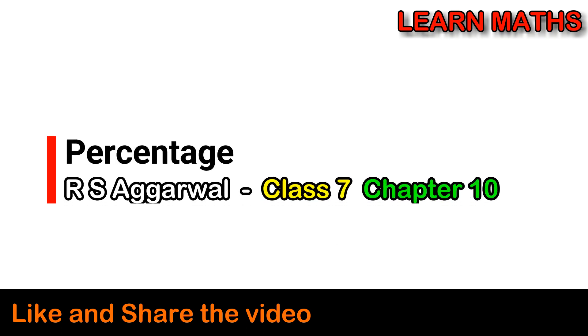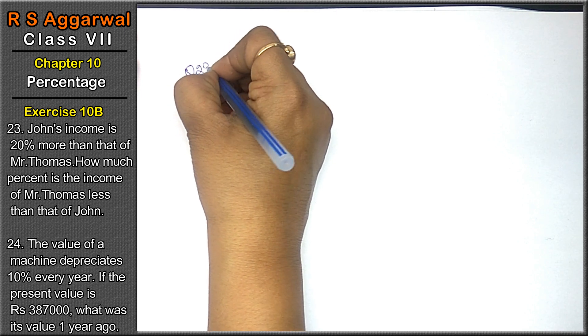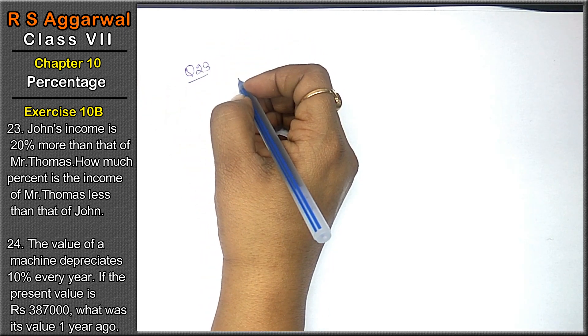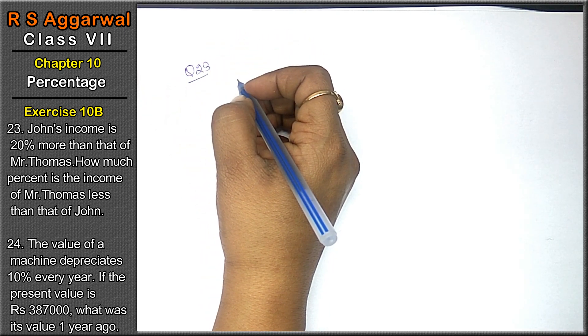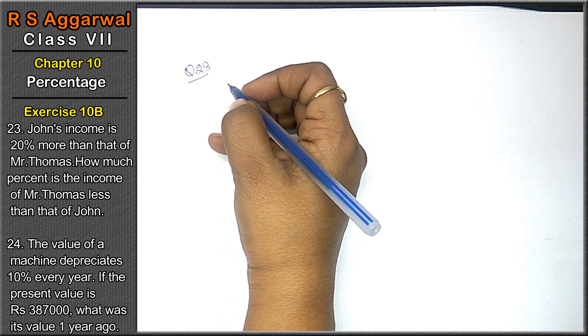Let's do question number 23 of Exercise 10B, that is percentage. Question number 23: John's income is 20% more than Mr. Thomas's income.